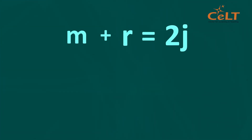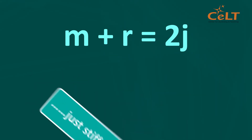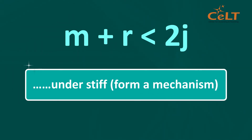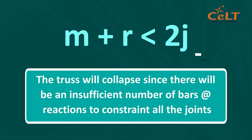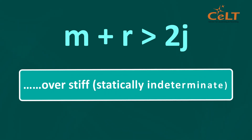If M plus R equals 2J, the truss is just stiff, or statically determinate. If M plus R is less than 2J, the truss is under stiff, forming a mechanism and is unstable — meaning the truss will collapse due to an insufficient number of bars or reactions to constrain all the joints. If M plus R is more than 2J, the truss is over stiff, or statically indeterminate.